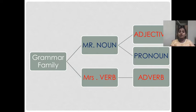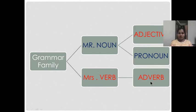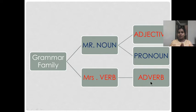That means two daughters and one son. The male members are indicated with blue letters and female members with red letters — just to identify the gender, to make it more interesting. So the three children are: Adjective, Pronoun, and Adverb. Mr. Noun and Mrs. Verb are blessed with three children — Adjective, Pronoun, and Adverb.